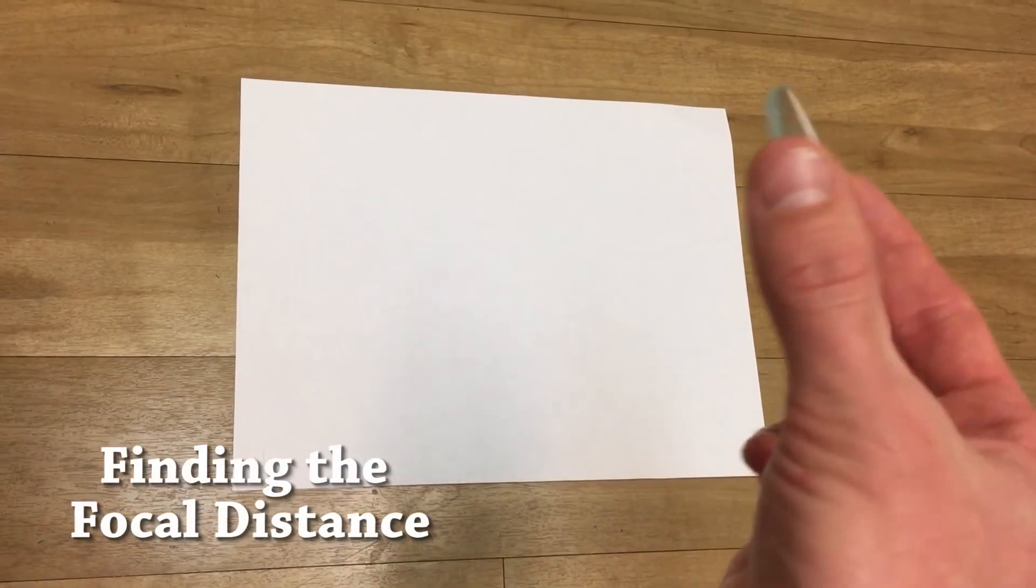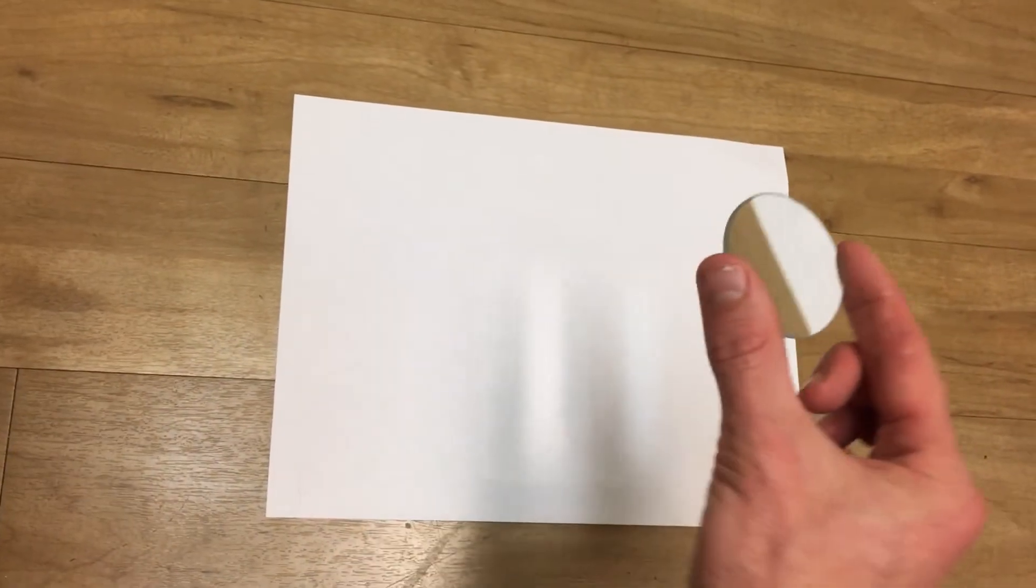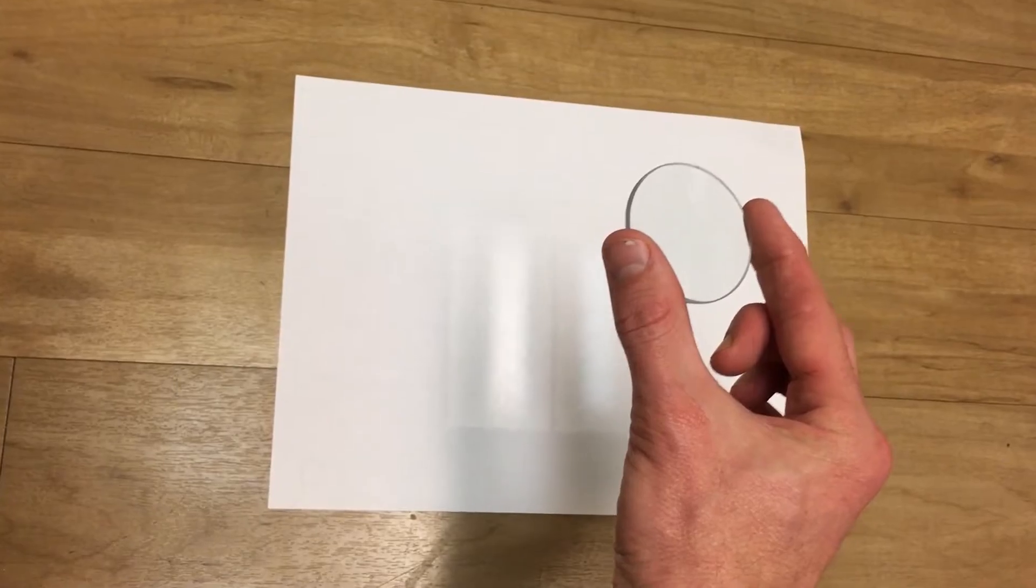Finding the focal distance for a convex lens is straightforward. Simply get a very distant light source and try to focus it. That's it. That's how it's measured.